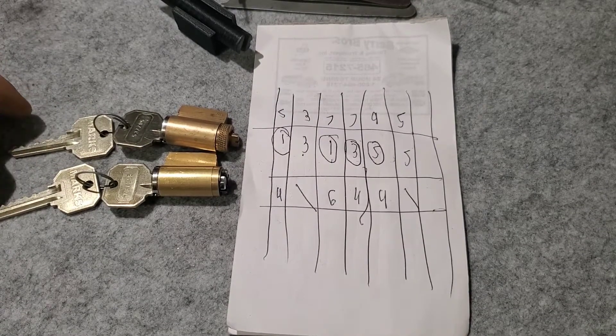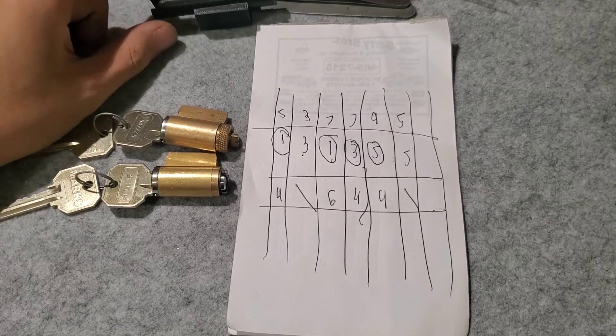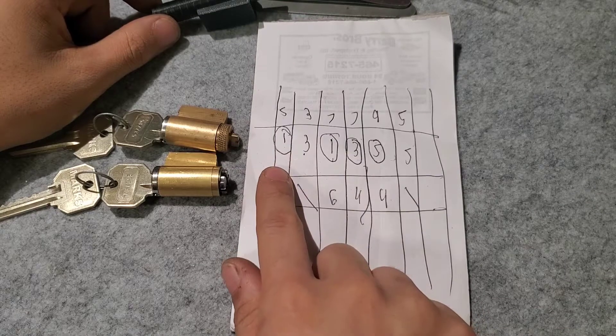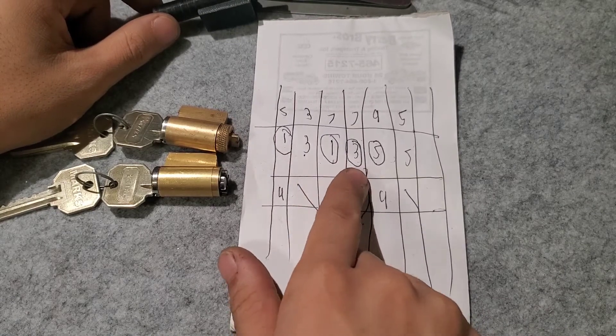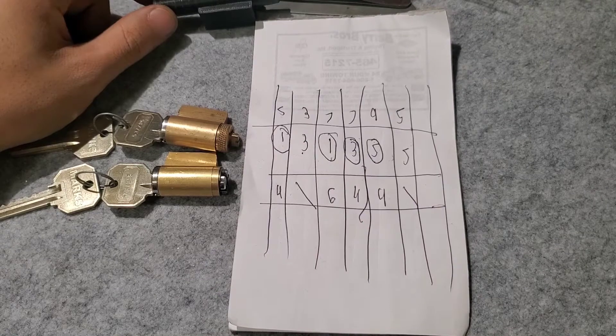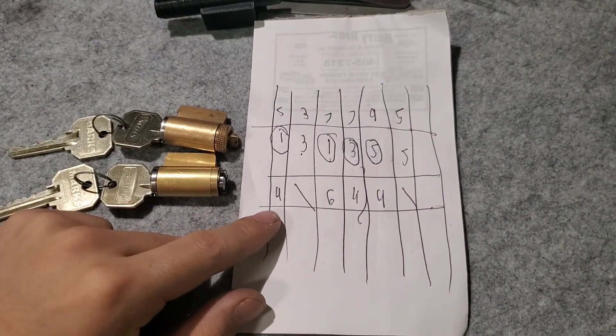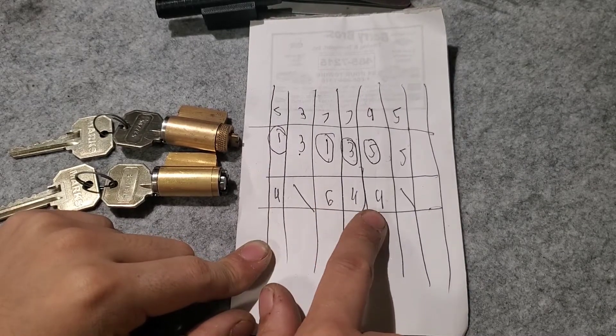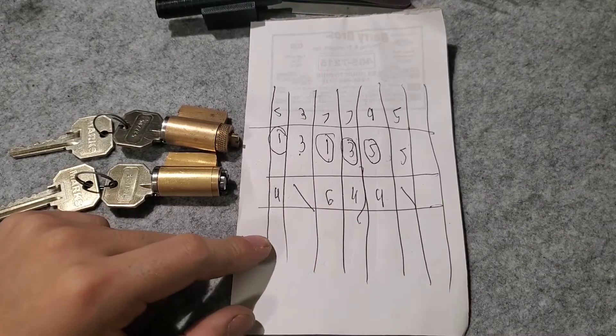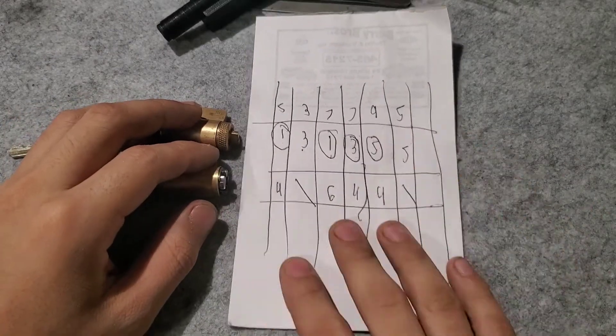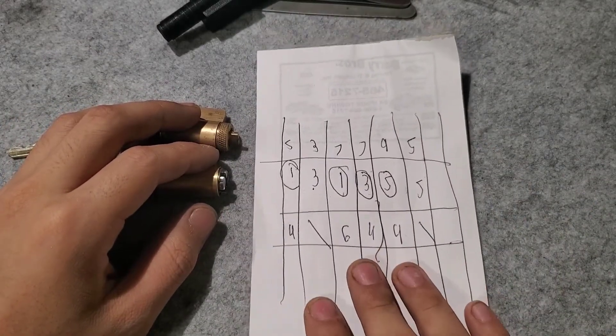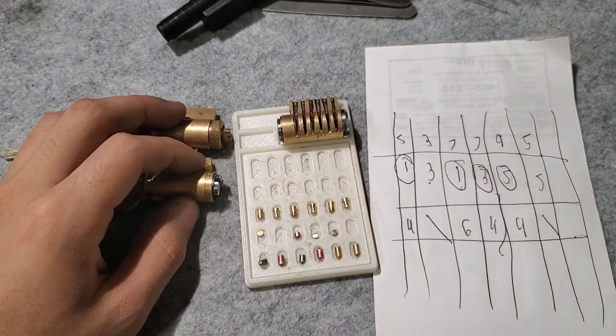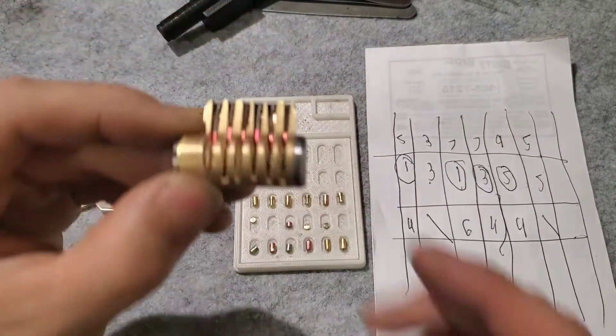So key pins we have one, three, one, three, five, five. And then for our mastering pins we have four, six, four, four. And for drivers I'll use security pins. You don't have to, but conveniently that's what I have in this tray. I also have a cutaway.